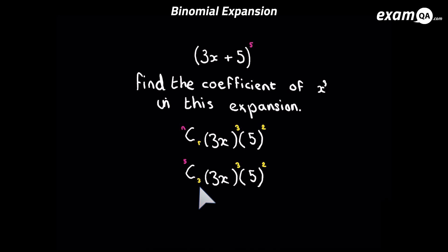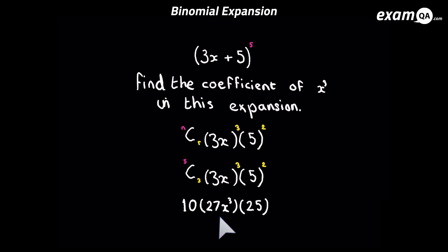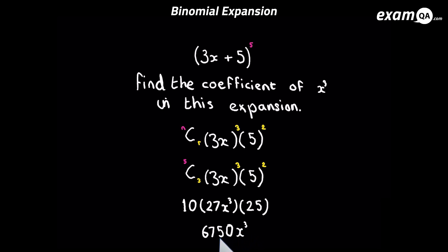On most calculators, the nCr button is on the shift divide button. I've chosen 5C3: press 5, shift divide, then 3 and press equals, and it'll give you that coefficient. The calculator gives us 10. Applying the powers, we get 27x cubed and 25 for 5 squared. Finally simplifying, we get 6750x cubed. So the coefficient of x cubed is 6750, which was much shorter than expanding the full brackets.